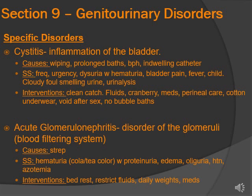Cystitis is inflammation of the bladder. Causes include not wiping correctly — wiping from back to front — prolonged baths with soap especially for females, BPH, or an indwelling catheter. Signs and symptoms include urinary frequency, urgency, dysuria with hematuria, bladder pain, fever, chills, cloudy foul-smelling urine, and the urinalysis is going to show it.